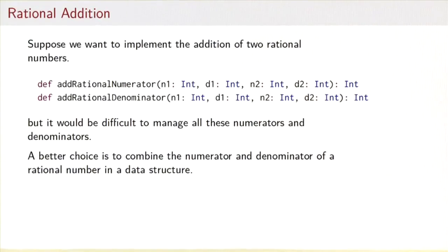In a sense we can already do that with what we know from Scala. We could define two functions, addRationalNumerator and addRationalDenominator, and they each get all the bits of the two rational numbers as arguments. So both functions would get the numerators and denominator of the first rational and the numerator and denominator of the second one.